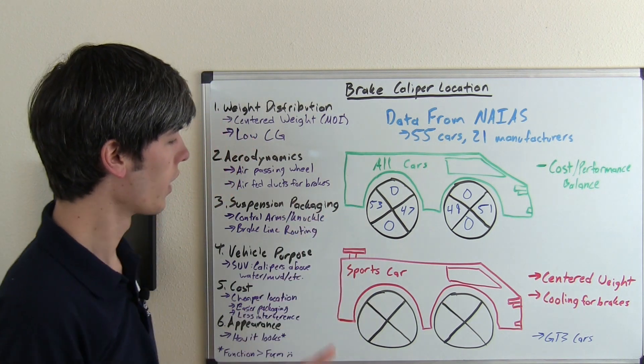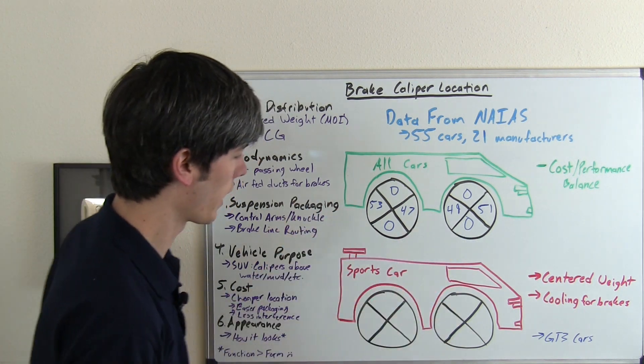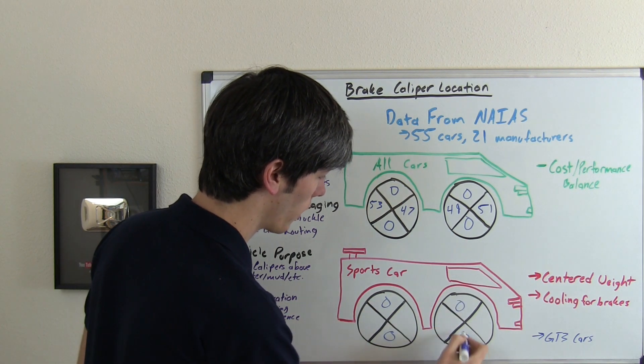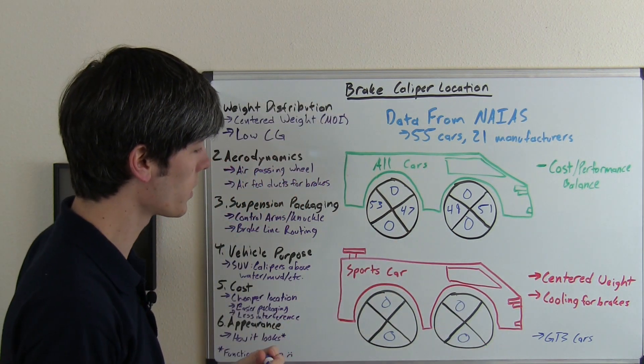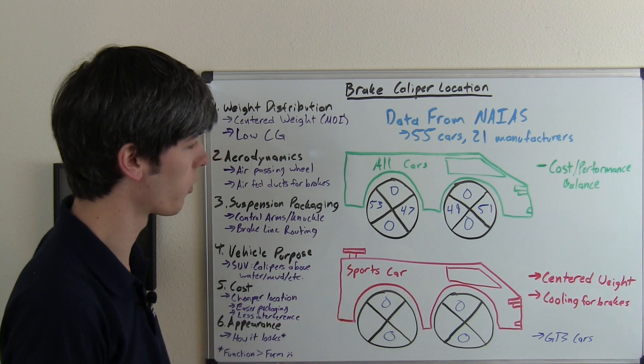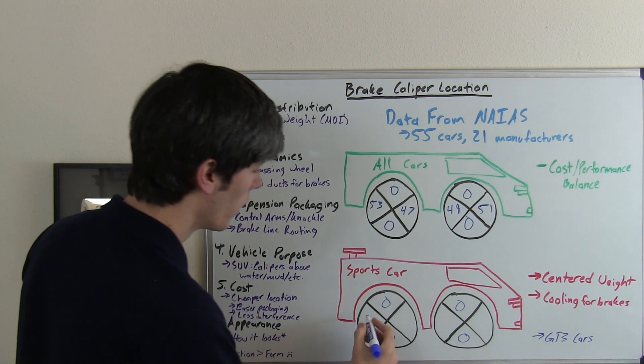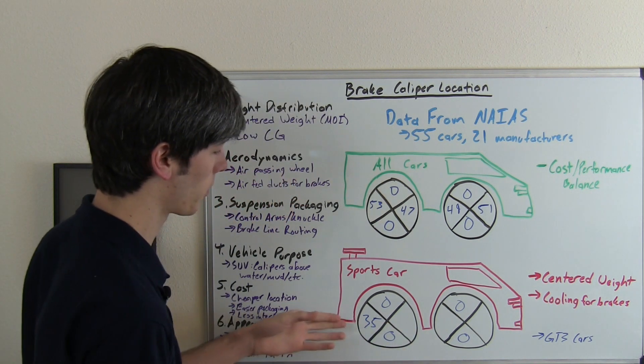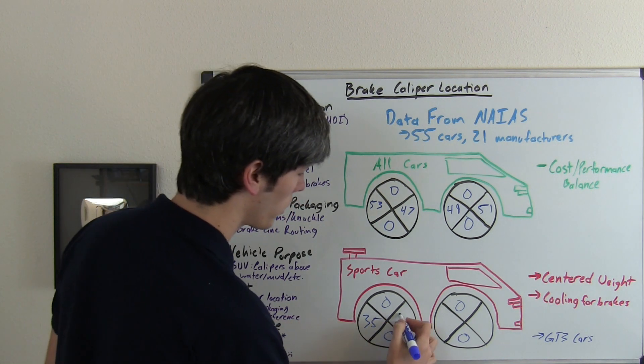And so of those cars, I took the same data and as we can tell, there's going to be zero up top and down low from the previous data. But what's interesting is there was definitely a bias for these performance oriented cars. So for the rear, 35 percent of the brake calipers were placed towards the rear, 65 percent.